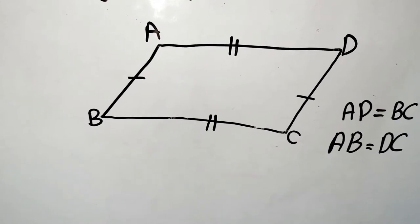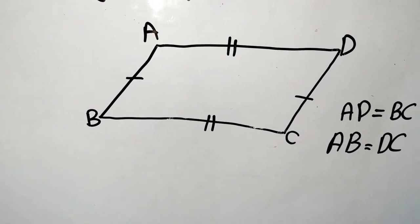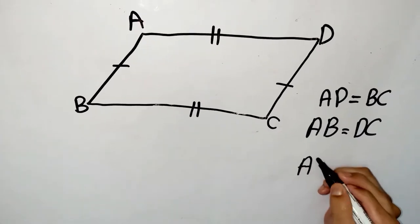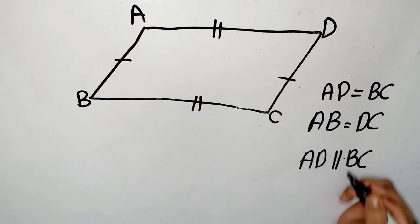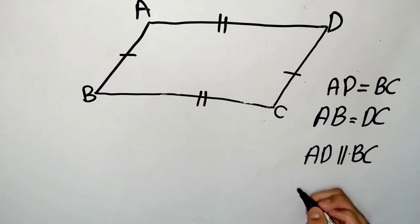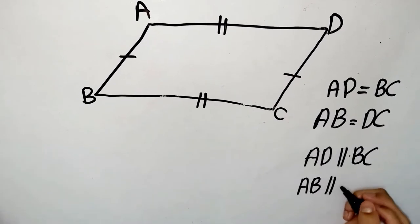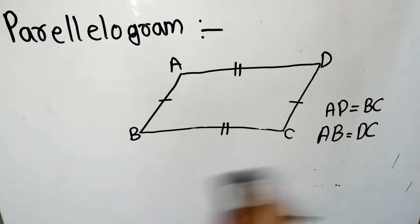In other words, we can say AD is parallel to BC — this is the symbol of parallel — and AB is parallel to DC. So now we will talk about a rhombus.